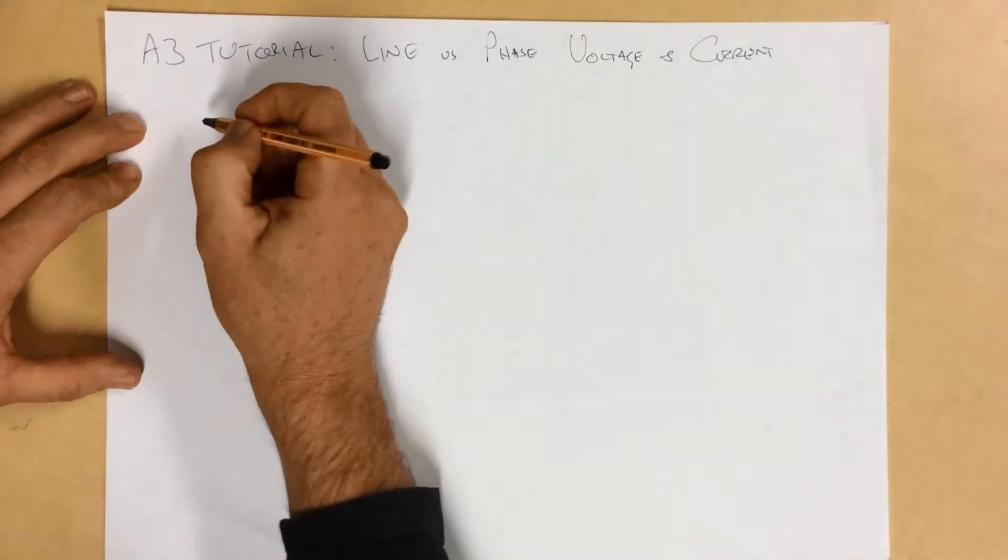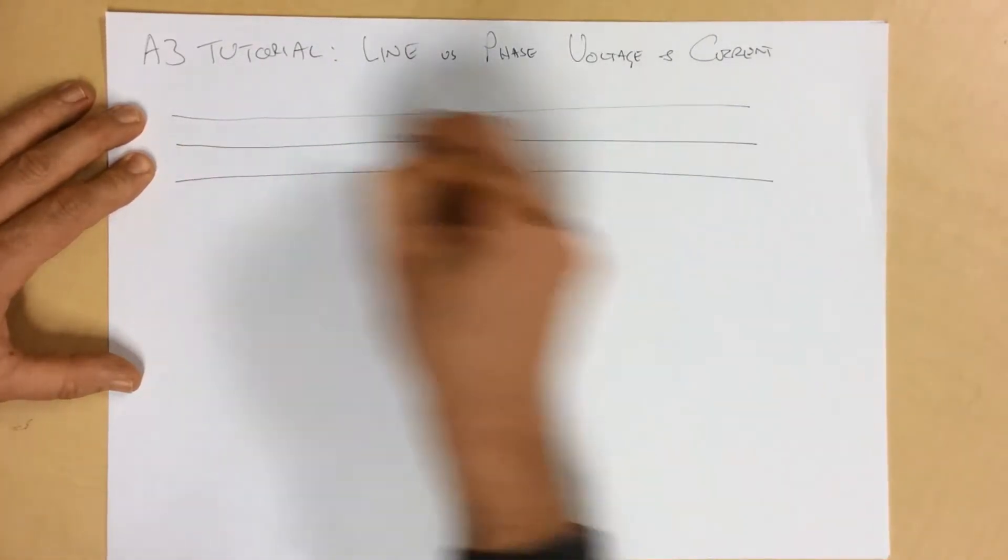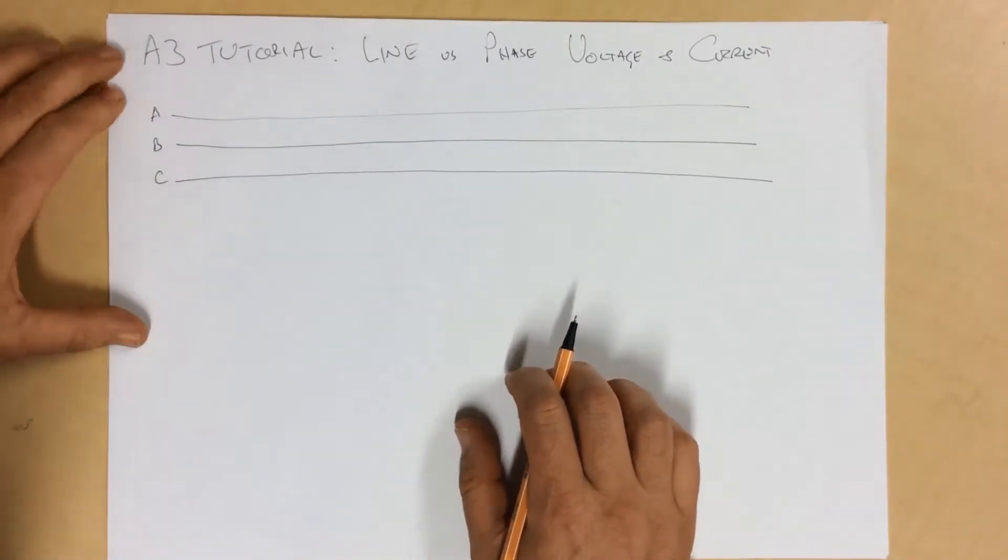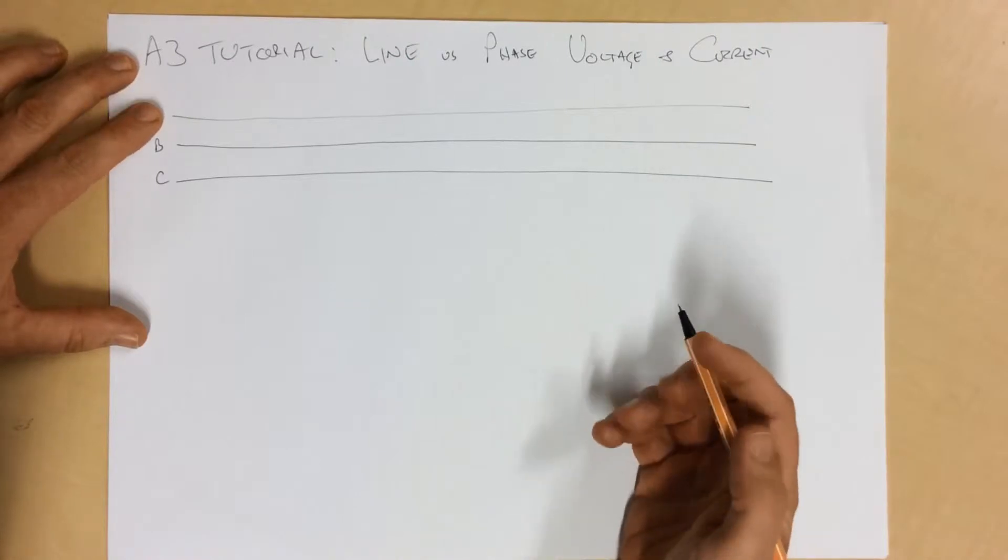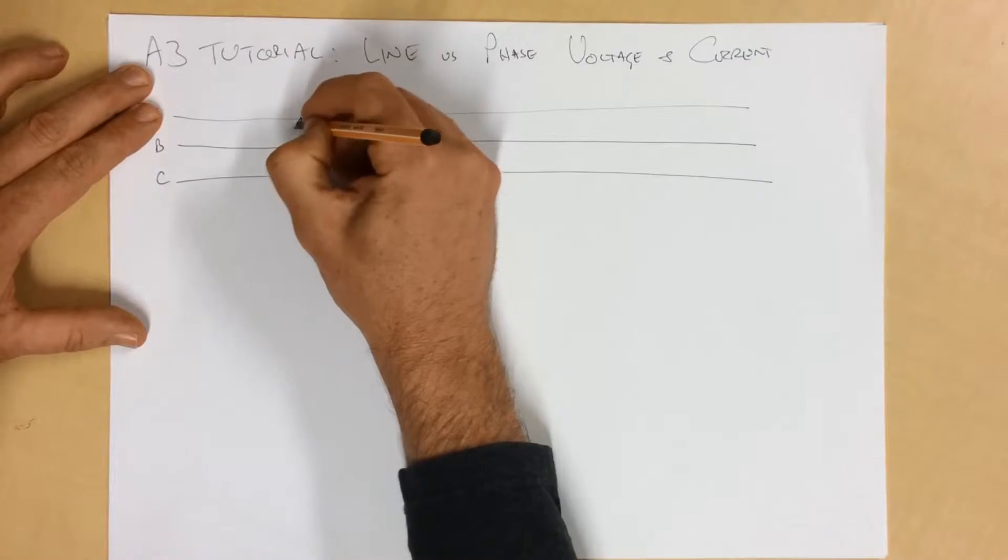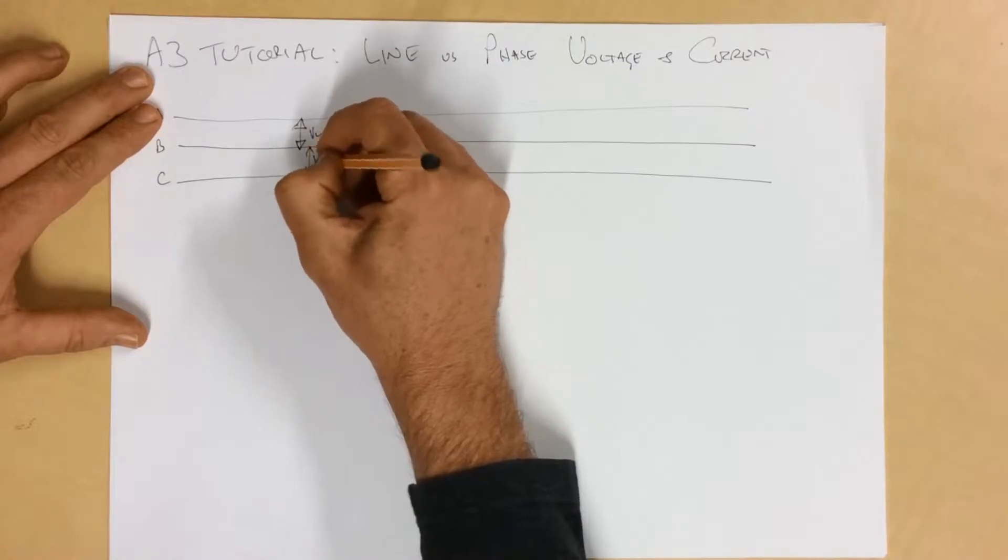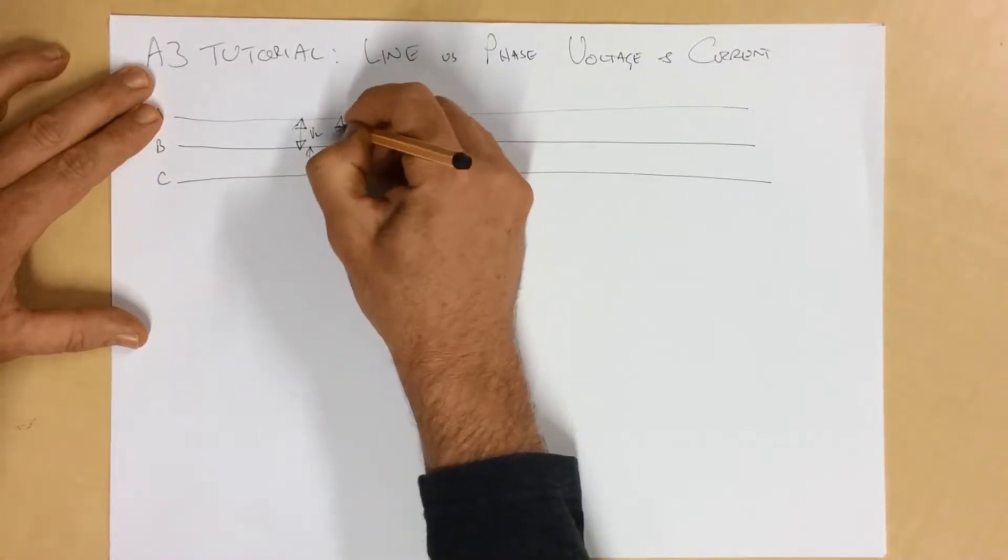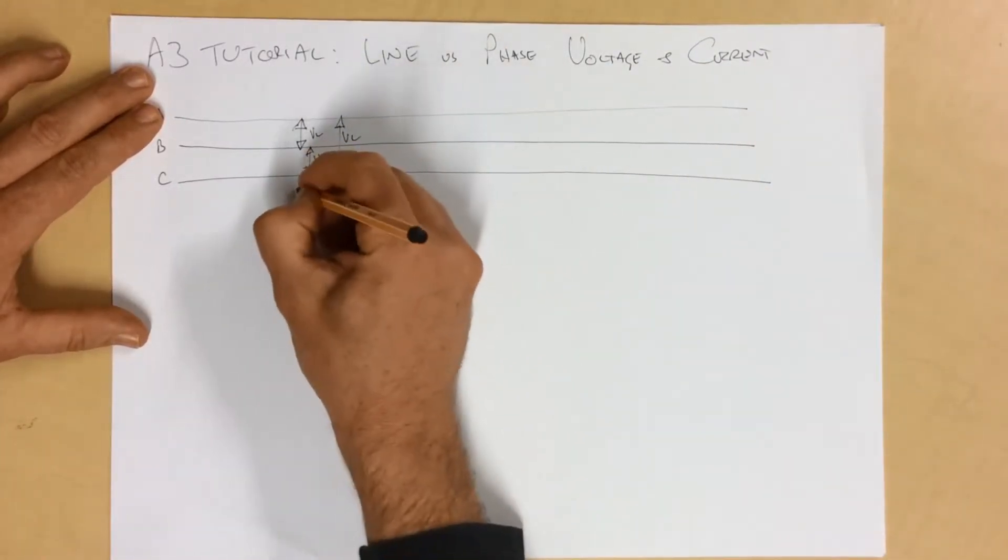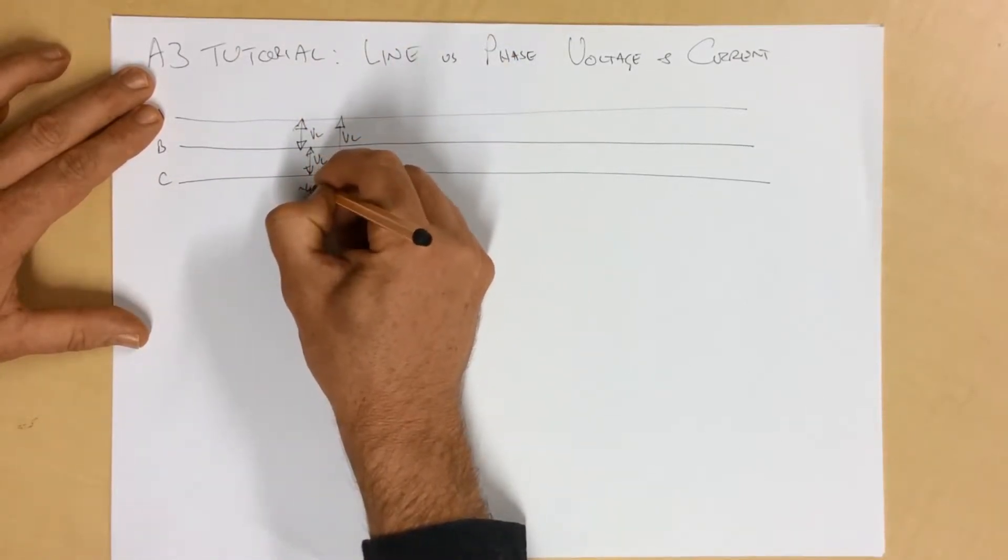Let's start with a transmission line. Here we have a very simple transmission line with our three conductors, and we'll call them A, B, and C. Now, the voltage between these points here is the line voltage, VL. And that is nominally, in a low voltage system around where I live, this is nominally around about 400 volts.